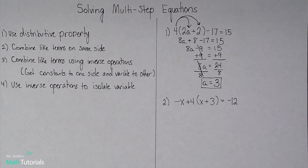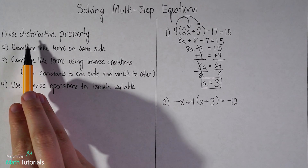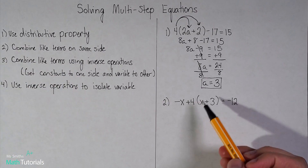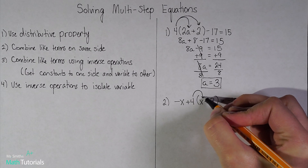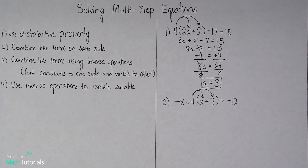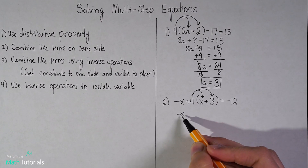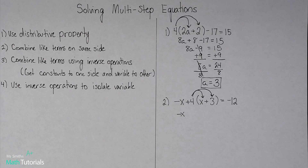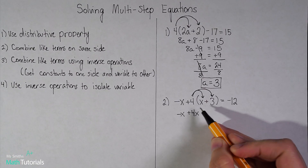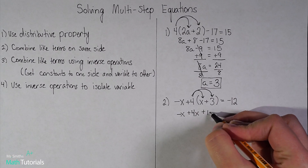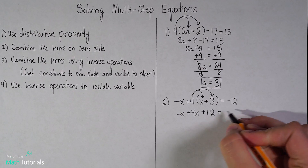Let's look at another similar example, but we've got some more negatives thrown in here. Continue following your steps. Start with step 1: use the distributive property — we want to get rid of any parentheses. I see a set here, so I've got to distribute this positive 4 to everything within the parentheses. I'm going to bring down this negative x — I'm not including it in the distributing. So positive 4 times x is positive 4x, and positive 4 times positive 3 is positive 12. Now I've gotten rid of those parentheses, and I bring down my equals negative 12.